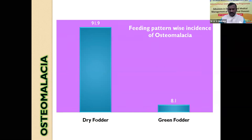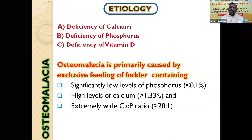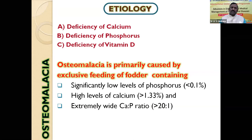The three important causes of osteomalacia include deficiency of calcium, deficiency of phosphorus, and deficiency of vitamin D. Our study clearly indicated that osteomalacia in cattle was primarily a phosphorus deficiency. It is a soil-borne type of deficiency — the soil is deficient, therefore the fodder is deficient. In India, dry fodder is fed to animals in rural areas without mineral supplementation, making those animals deficient.